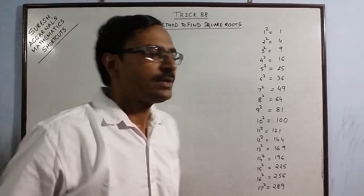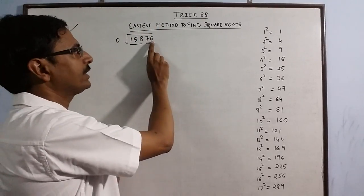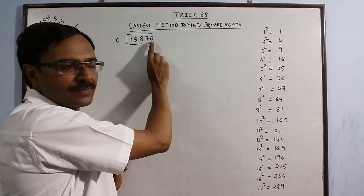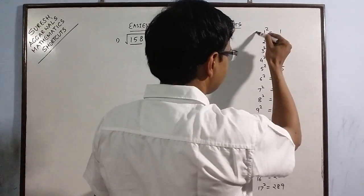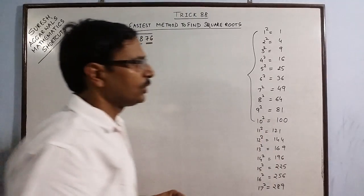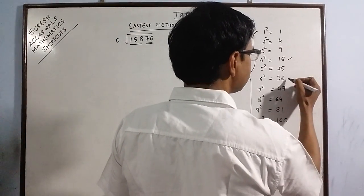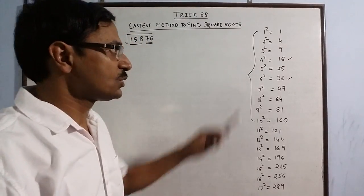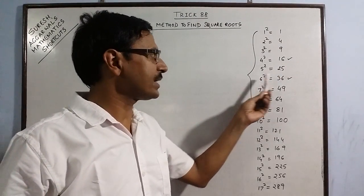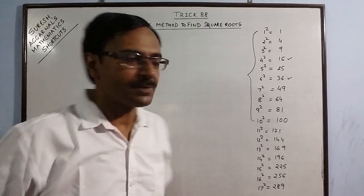So what you do is just have a look at the unit place here, 6. So if you observe numbers from 1 to 10, you will find 6 here and 6 here in the unit place. So 4 square is 16, you have 6 in the unit place, and 6 square is 36, you have 6 in the unit place.